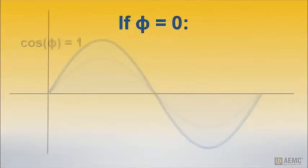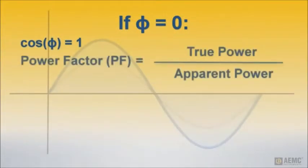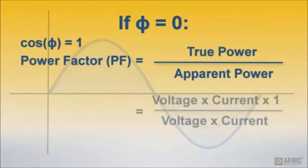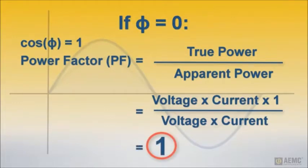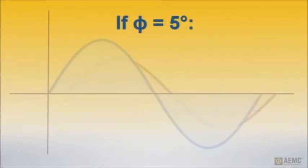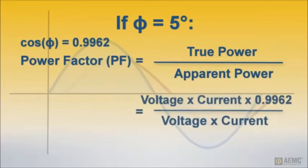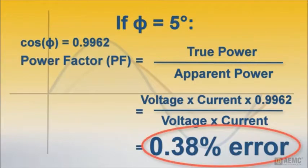For example, suppose we are measuring a circuit with no phase shift. In other words, current and voltage waves are peaking simultaneously. As we showed earlier, the power factor for this circuit is 1. If the current probe introduces an error in the phase measurement of 5 degrees, power factor would be 0.9962, a measurement error of 0.38%.